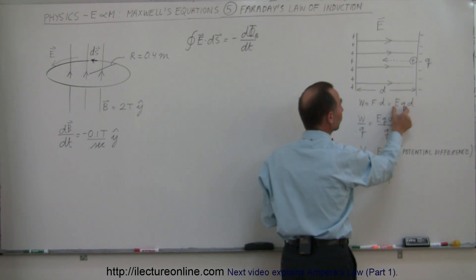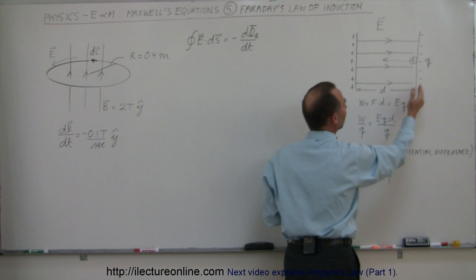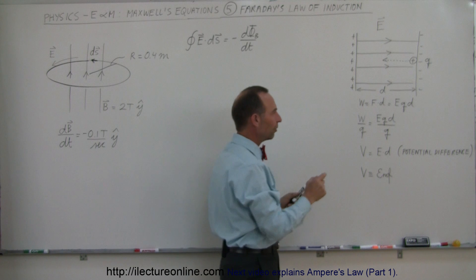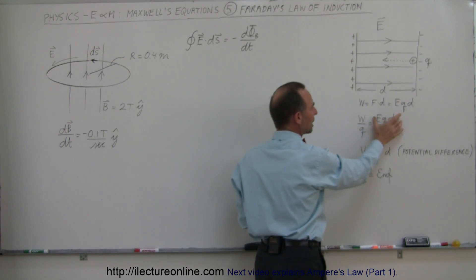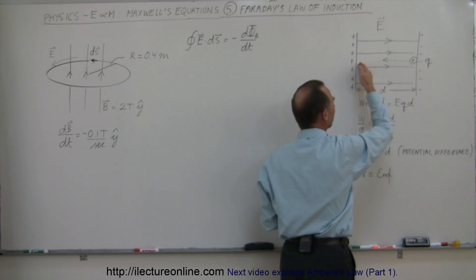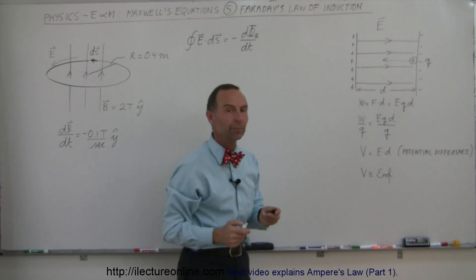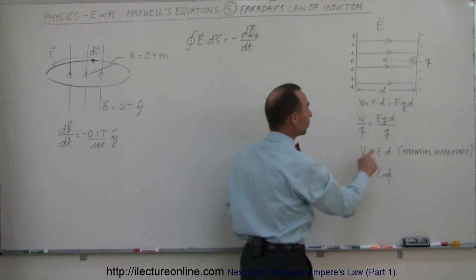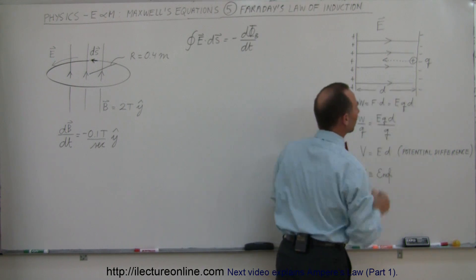Taking the force E times Q multiplied by the distance traveled D gives us the work done to move the small charge from one side to the other. If we divide that work by the test charge Q, we get EQD divided by Q, which equals E times D. By definition, work done divided by Q equals the potential difference between the two plates — indicated by V — which therefore equals E times D, since the Q's cancel out.